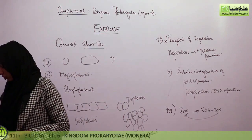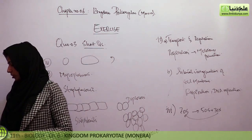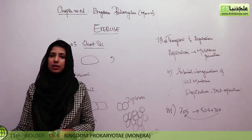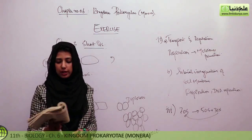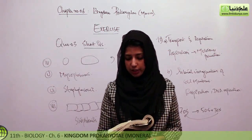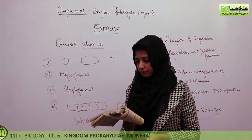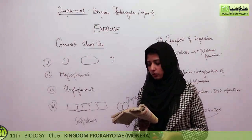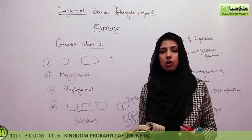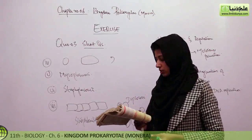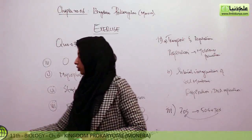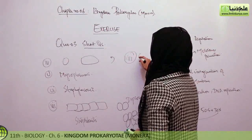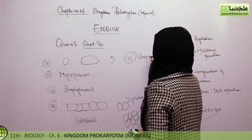Last short question: you observe a culture of predominantly round bacteria. They have failed to separate after division, resulting in long chains of cocci. Such an arrangement would be called streptococci.